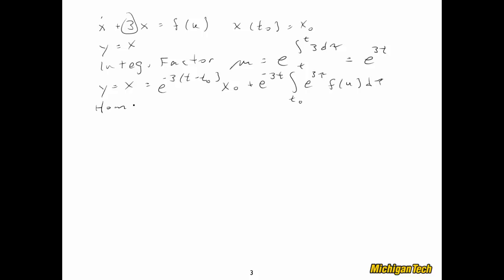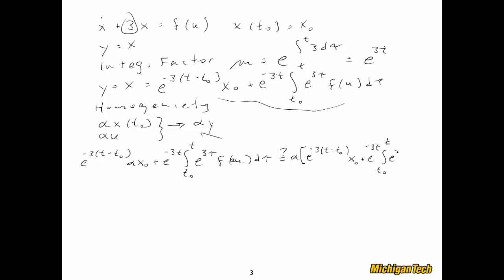So now, let's go ahead and check homogeneity. And again, that's alpha x(t0), alpha times u. And the question is, does that give us alpha times y? So let's just go ahead and do it. We'll replace every occurrence of x0 and u in that solution with alpha times x0 and alpha times u, and then compare it to the quantity alpha times that solution y. Let's see what we get. And here we go. So now, I got a little bit jammed up right there, but there's an alpha times u as the argument to that function f.